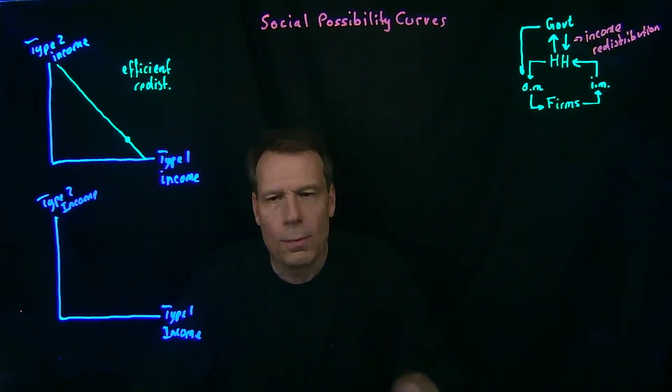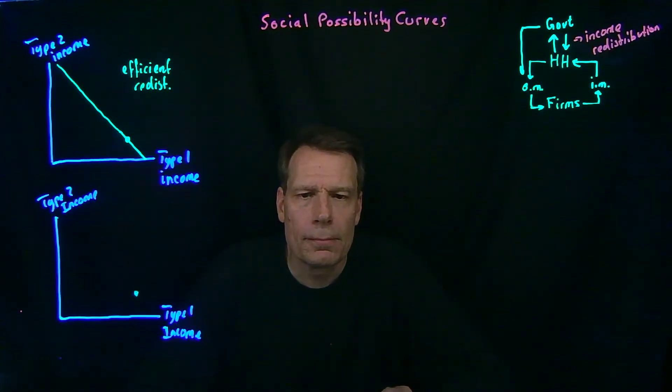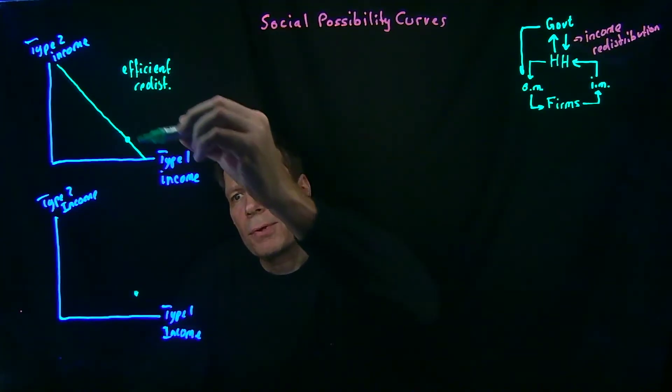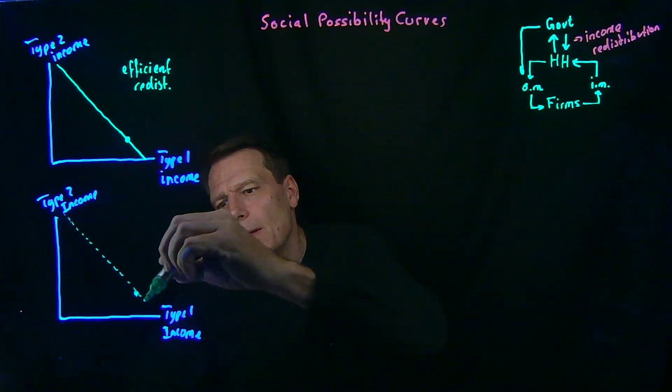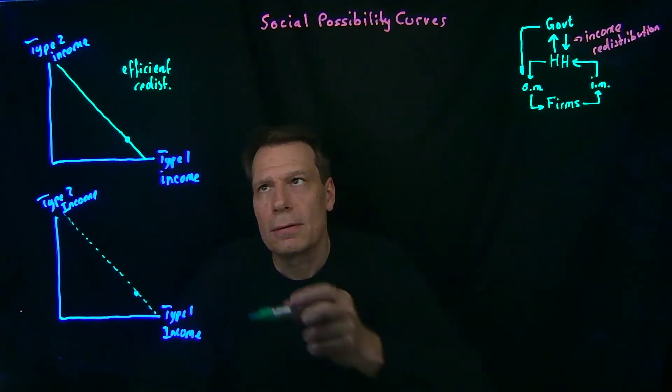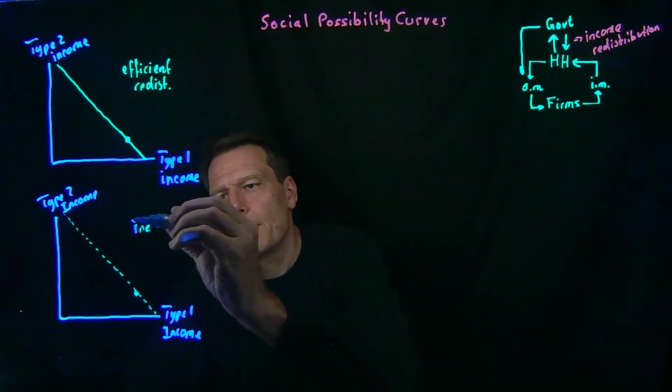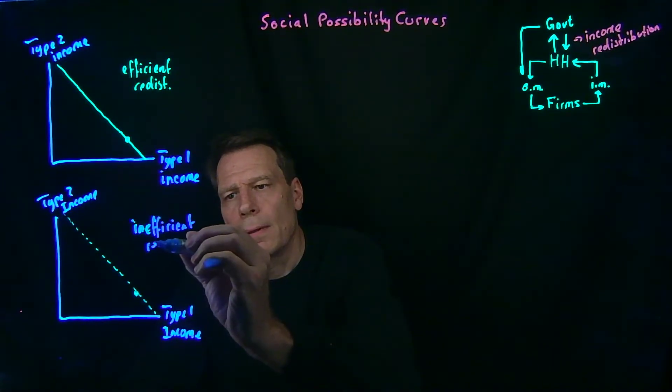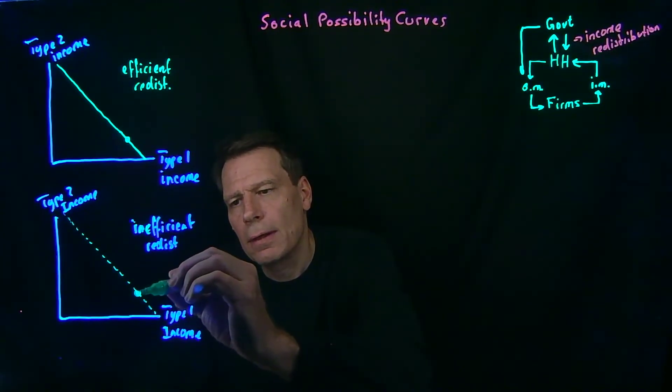And we'll again start with our starting point. If we did nothing, we'd end up at some point like this. Now, if we just put this into the picture, it can guide us to thinking about where will we be if we use inefficient redistribution. Well, one point that we know would still lie on the social possibility curve would be the point where we do nothing. We could simply stay at that point and do nothing.